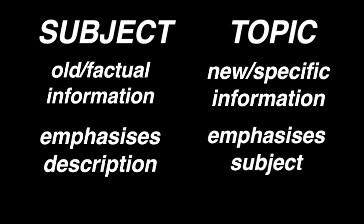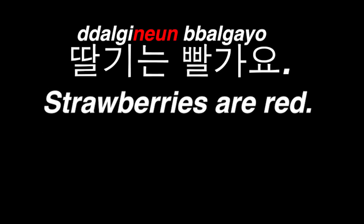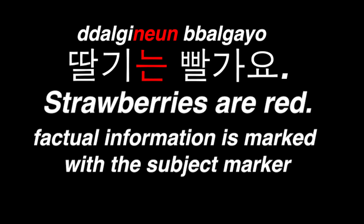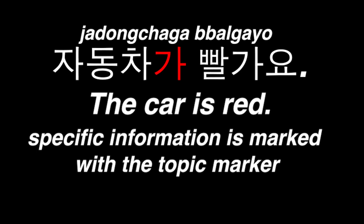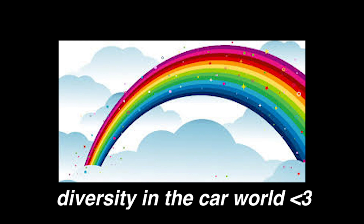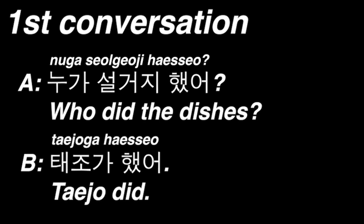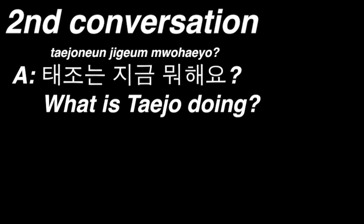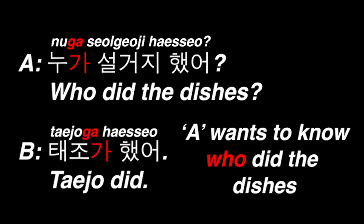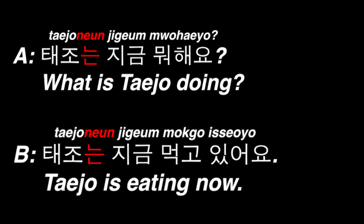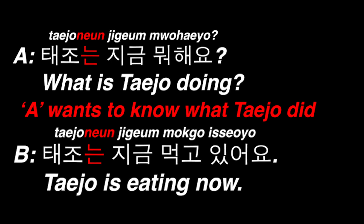For example, 딸기는 빨개요, 'strawberries are red,' uses the subject marker because it's a general fact. But 자동차가 빨개요, 'the car is red,' uses the topic marker, because cars can be many different colors. As for shifting the topic, consider two conversations. In the first: '너가 설거지했어? 대조가 했어?' — you'd use the topic marker because the speaker wants to know who did the dishes. In the second: '대조는 지금 뭐예요? 대조는 지금 먹고 있어요.' — the subject marker is used because the speaker is more interested in what 대조 is doing, not who is doing it.